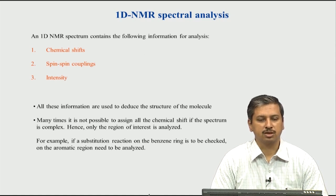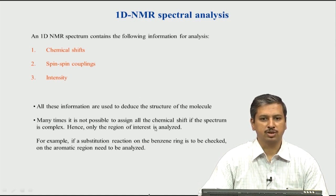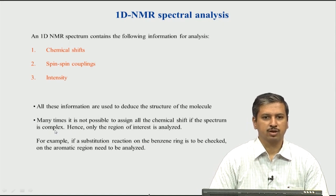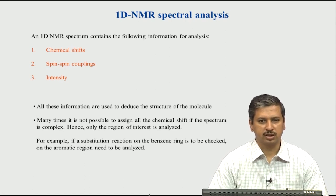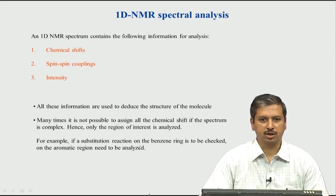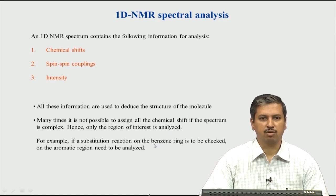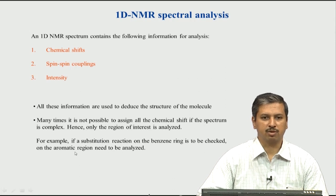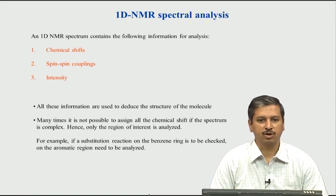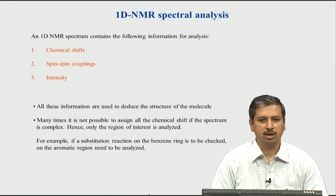Many times it is not possible to assign all the chemical shifts when the spectrum is complex. What we typically do is look only at the region of interest. For example, if there is a substitution reaction in chemistry — suppose a benzene ring gets substituted with some functional group — we just look at the aromatic region, because we know the aromatic region must undergo a change if there is a substitution. So we do not look at the entire NMR spectrum, but focus only on the aromatic region. If you have an unknown compound, of course you have to look at the full NMR spectrum and analyze the full data.